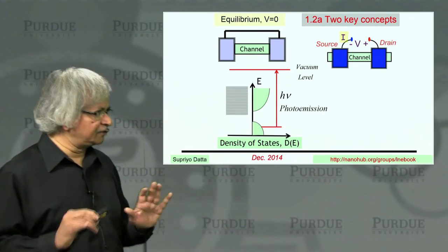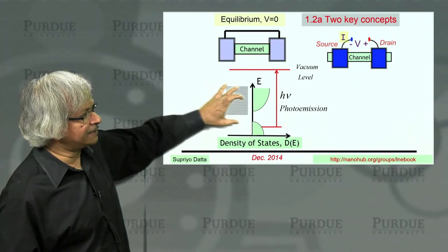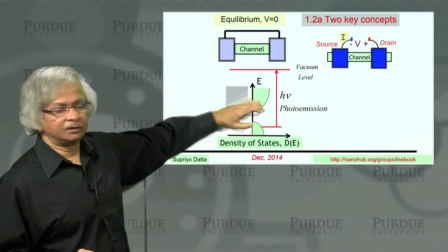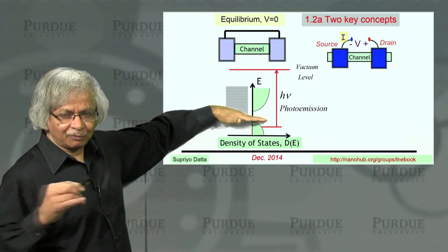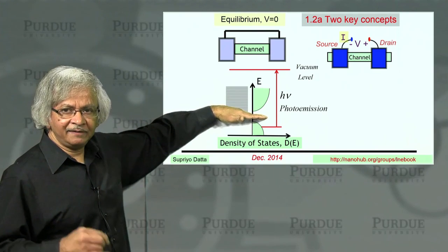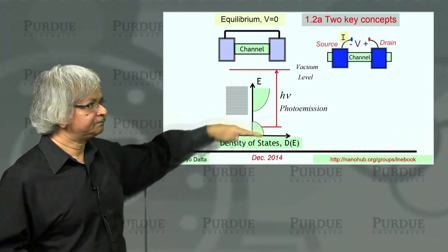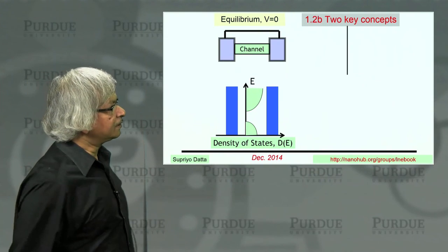But as far as current flow is concerned, what really matters is this top part. The part near the Fermi energy. Now what's that?